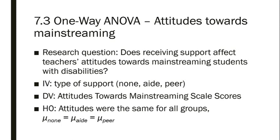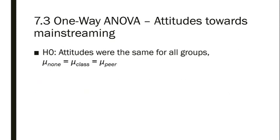The null hypothesis is that attitudes were the same for all groups — the mean Attitudes Towards Mainstreaming Scale score was the same for the no-support group as for the teacher-aid group as for the peer-support group. When we've been talking about t-tests, we are generally faced with three different options for alternative hypotheses: group 1 might have the larger mean, group 2 has the larger mean, or we have a non-directional hypothesis that the two means are simply not equal.